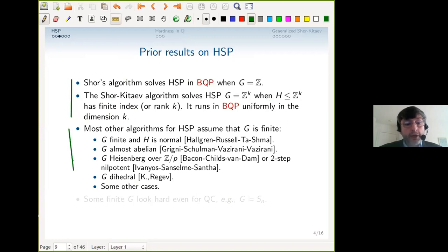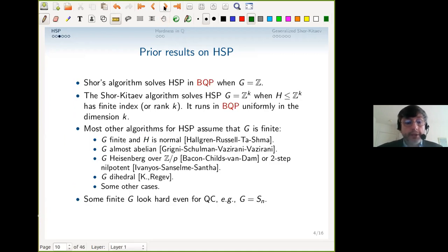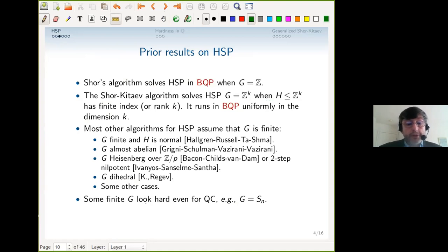Now, after this monumentally important start with infinite groups, most other algorithms assume G is finite. There are results when G is finite and H is normal, when G is almost abelian, when G is Heisenberg or two-step nilpotent, when G is dihedral—I contributed to that problem—and some other cases. The infinite group origins were set aside to some extent, and I want to revisit it, although even when G is finite, if it's a hard case like the symmetric group, there are hard cases.